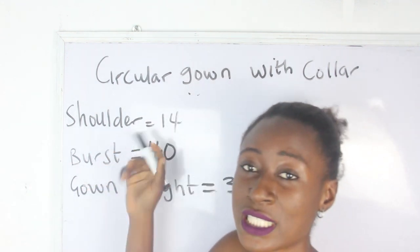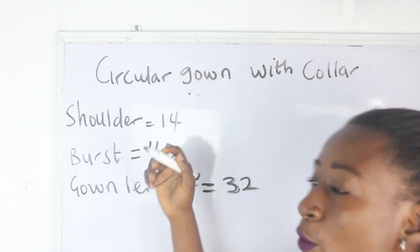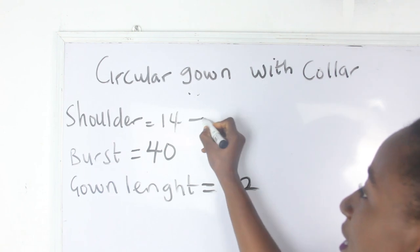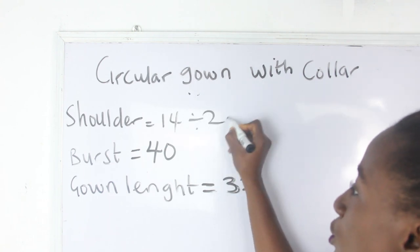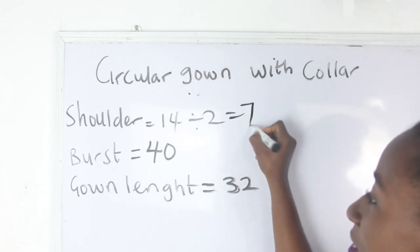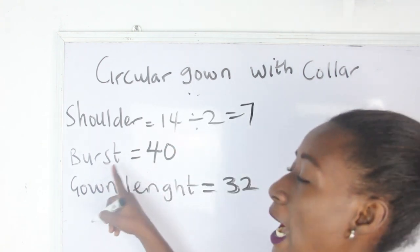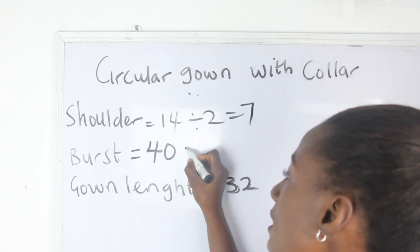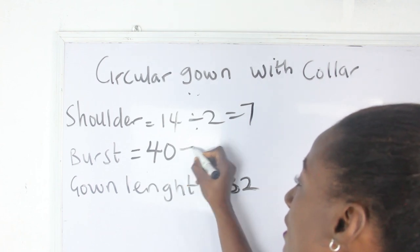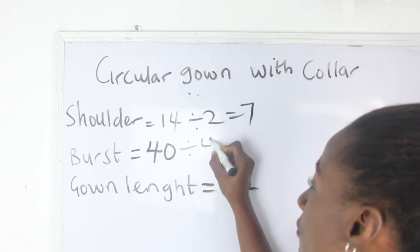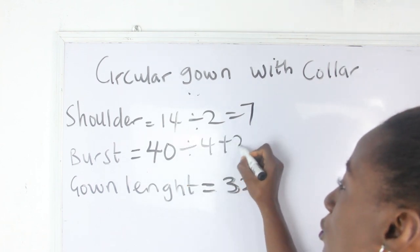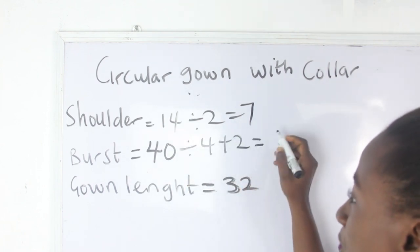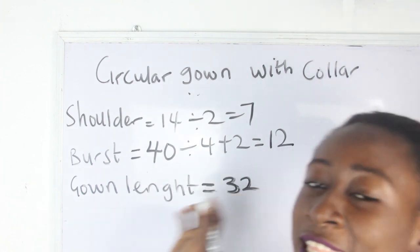Our shoulder measurement is 14, divided by 2, giving us 7. Our bust is 40, divided by 4 plus 2, giving us 12.